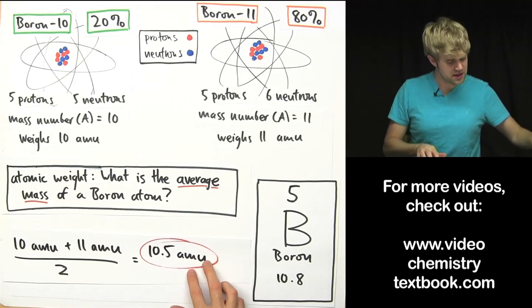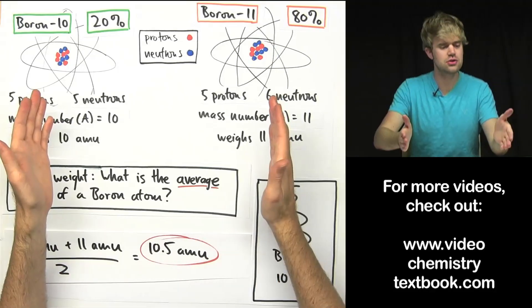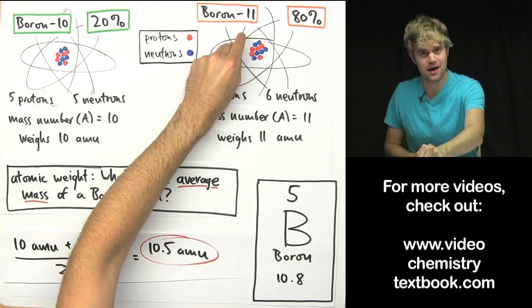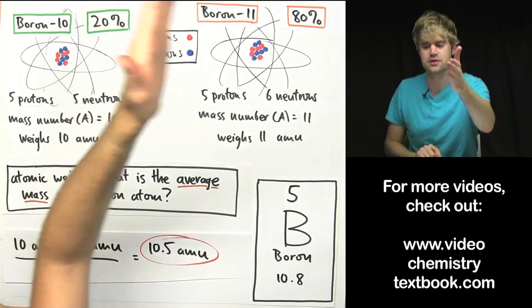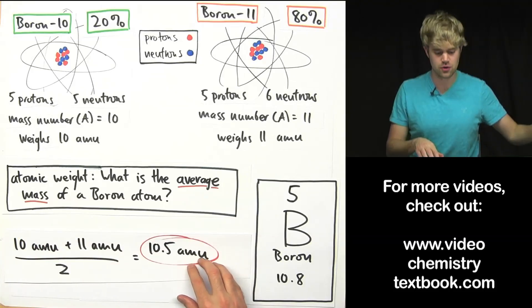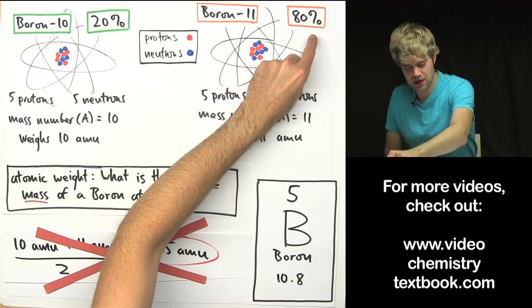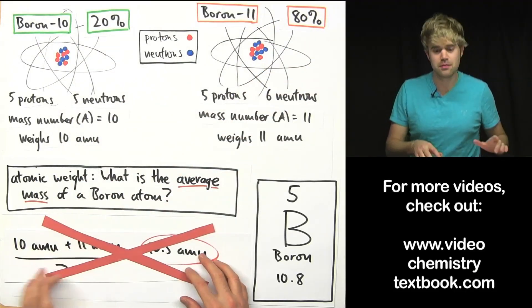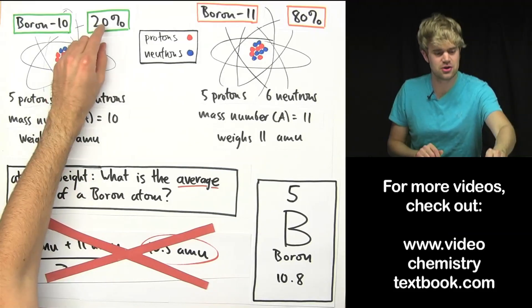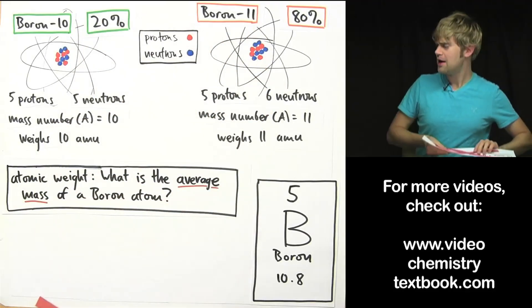That's not the right way to find the average mass of a boron atom. Here's why that's wrong. Because this formula, 10 plus 11 divided by 2, that assumes that we have the same number of boron-10 and boron-11. If it were 50% this and 50% that, then sure enough, we could just add up the two weights and divide by 2. But because we have only 20% of this and 80% of this, we can't just add them up and divide by 2. So what do we have to do? We have to use a more complicated equation that takes into account the amount of each that we have.